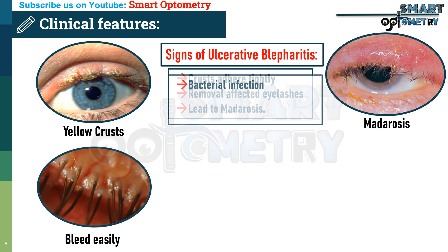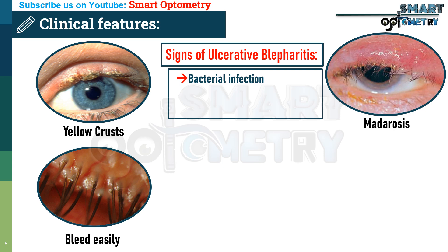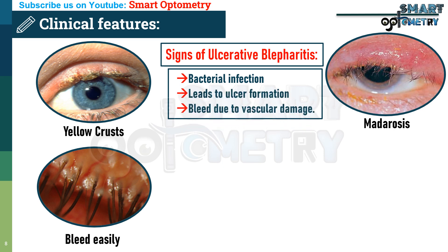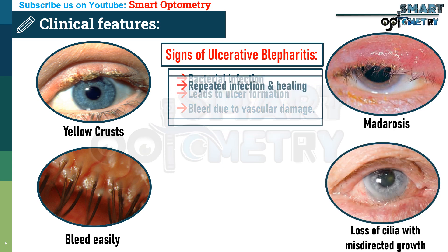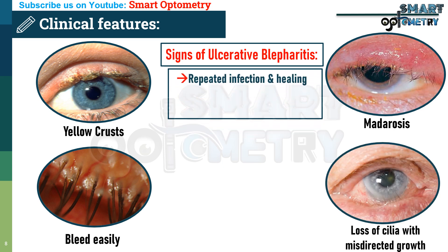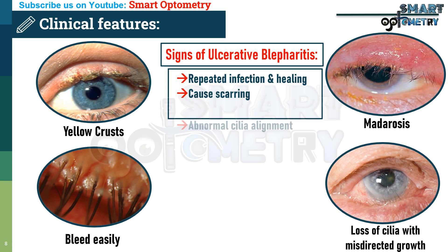The affected area bleeds easily as bacterial infection in hair follicles leads to ulcer formation, which bleeds due to inflammation and vascular damage. Loss of cilia with misdirected growth occurs as repeated infection and healing cause scarring and abnormal cilia alignment due to tissue contraction.